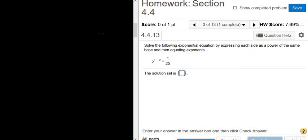Solve the following exponential equation by expressing each side as a power of the same base and then equating exponents. Okay, so we have 5 to the 1 minus x equals 1 over 25.